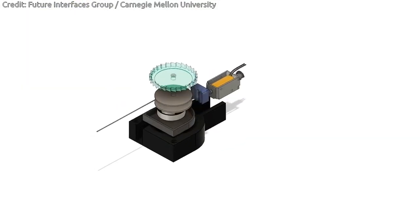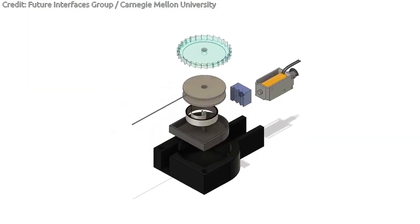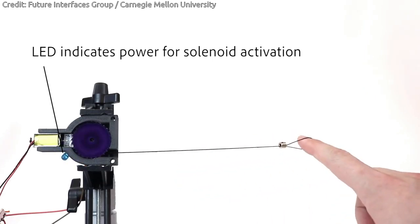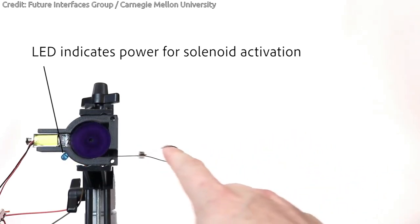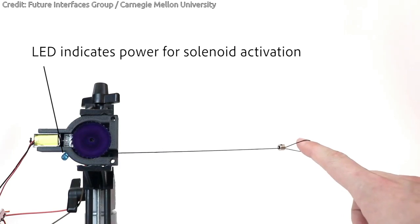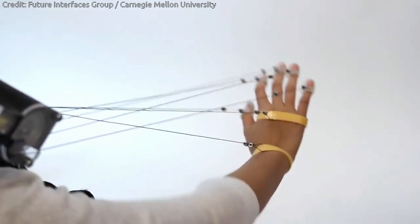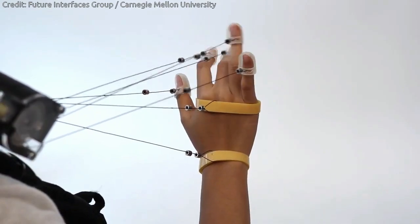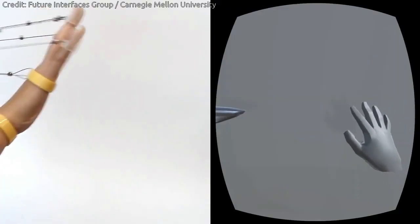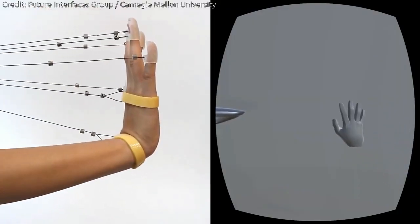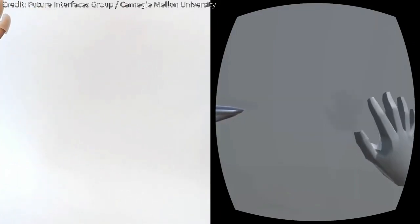The researchers experimented with a number of different strings and string placements, eventually concluding that attaching one string to each fingertip, one to the palm, and one to the wrist provided the best experience. A Leap Motion sensor, which tracks hand and finger motions, is attached to the VR headset.